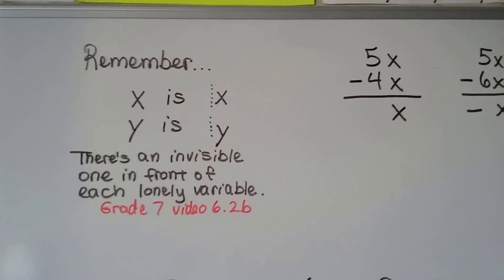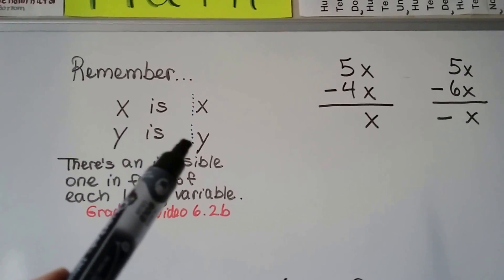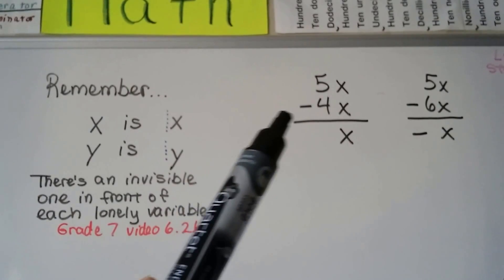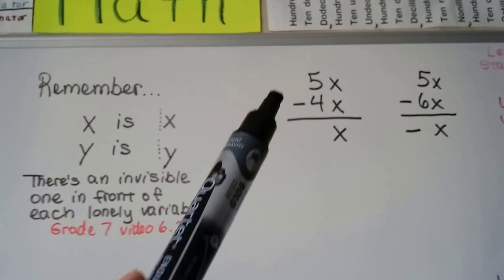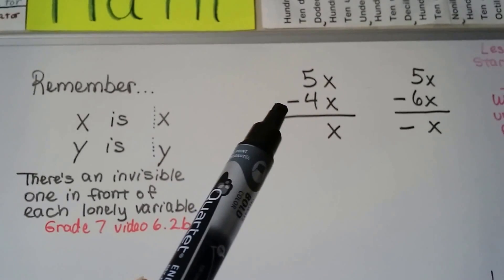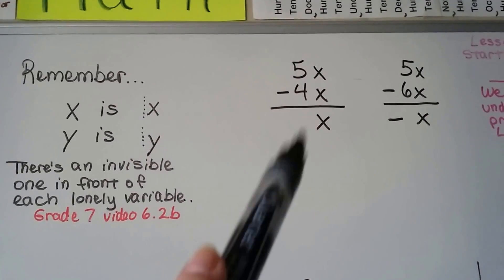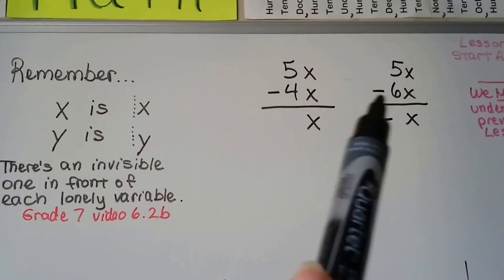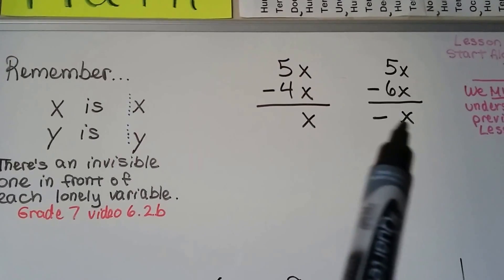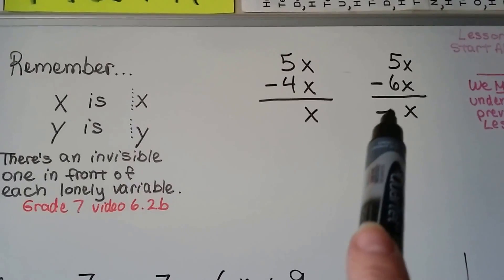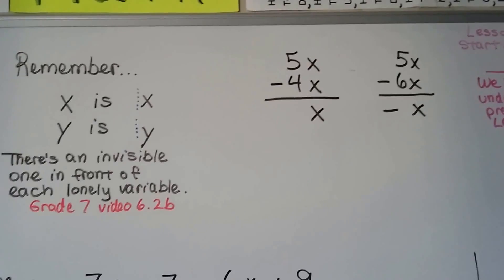If you're really confused you need to go back and watch the previous video. Remember, when a variable is by itself it actually has an invisible 1 in front of it. When we're doing subtraction or adding a negative — same thing — and we have a 5x and a negative 4x, we're going to end up with just an x. It's a 1x; we just don't write the 1. If we have a 5x and we're taking away a 6x, we're going to end up with a negative x, which is really negative 1x. So just imagine that invisible 1 is there.